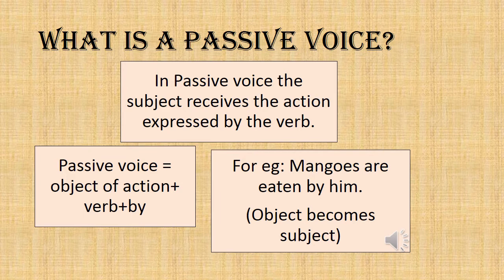What is a passive voice? In passive voice, the subject receives the action expressed by the verb. So passive voice means it is the object of action plus verb plus 'by.' For example, 'mangoes are eaten by him.' Here, the object becomes the subject.